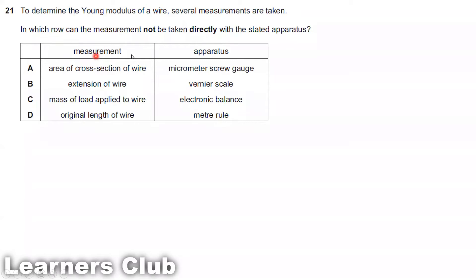If you want to measure the area of the cross-section of the wire, you cannot measure it directly using a micrometer screw gauge. You need to measure the diameter first using a micrometer screw gauge, and then use the formula to get back to the area of the cross-section of the wire. So the answer should be A.